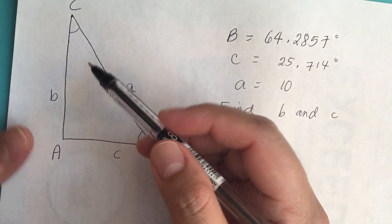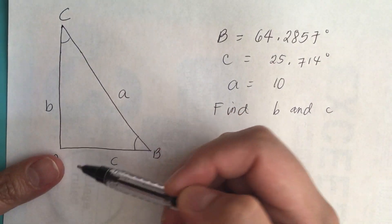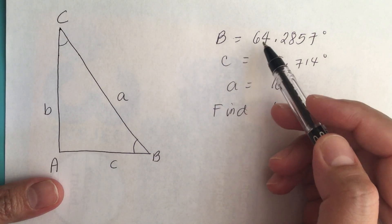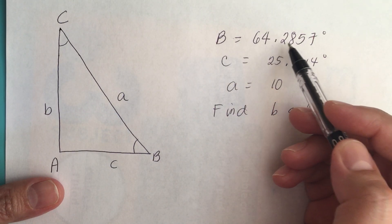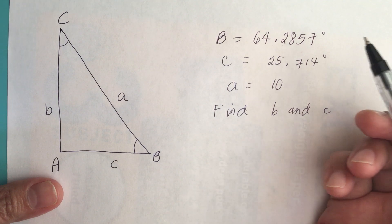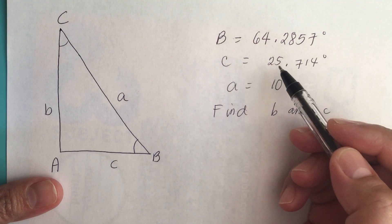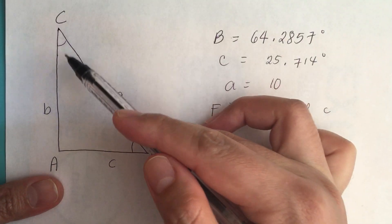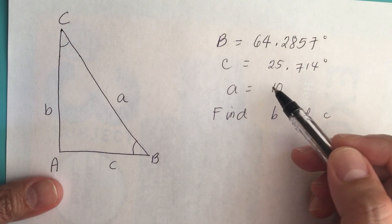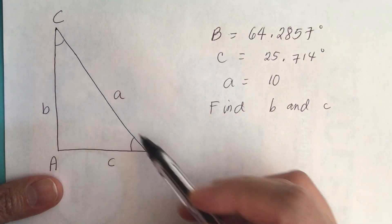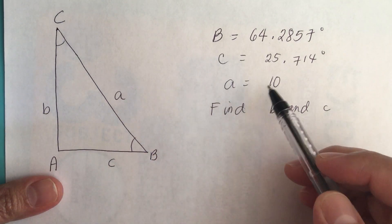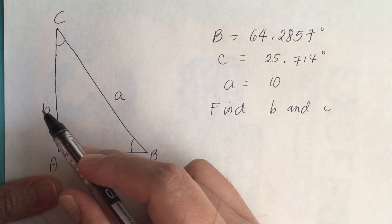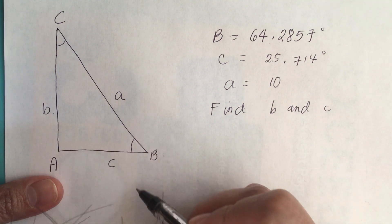We have a red triangle here. B is equal to 64.2857 degrees, C is equal to 25.74 degrees, and the length of A is equal to 10. They want us to find B and C.